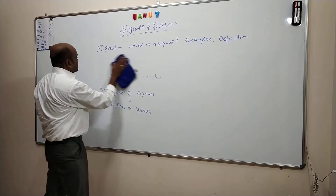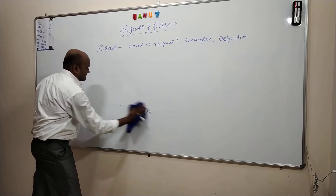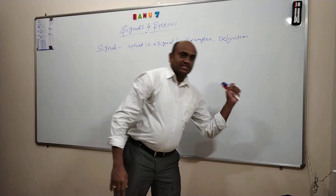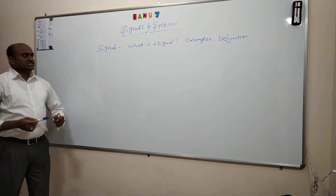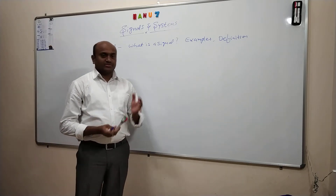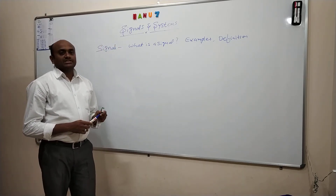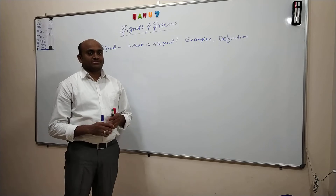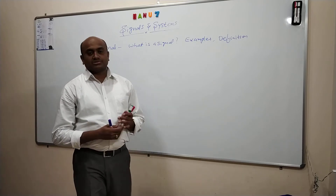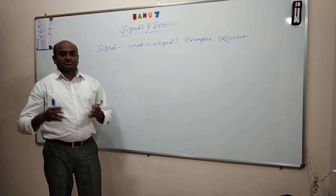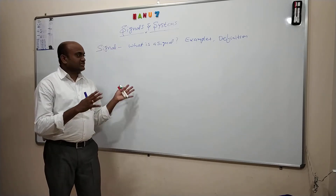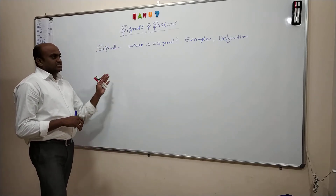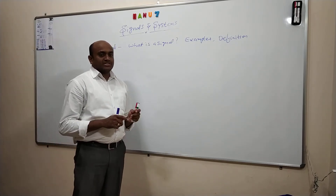So let us start with the first point: what is a signal? Let us take some examples. In day-to-day life, from morning since we go to bed, we encounter the word 'signal' at least 10 to 20 times. We say things like 'signals tend to drop in my mobile,' 'there is no signal in the mobile, I cannot hear you.' Such things we can see. We will also see traffic signals, road signs — many examples of signals in day-to-day life.